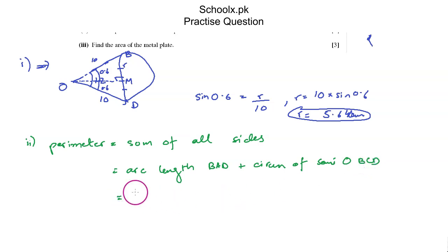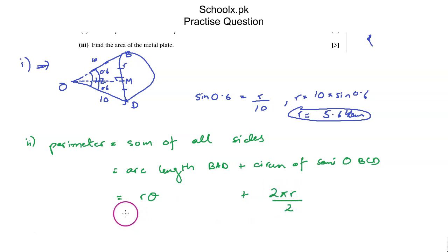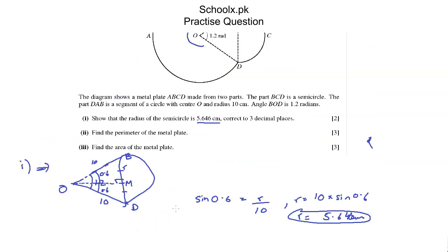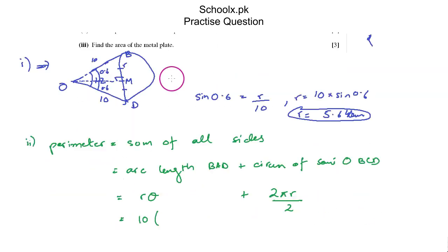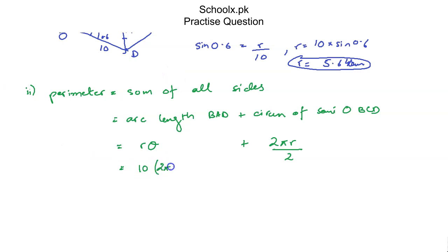The formula for arc length when the angle is in radians is Rθ, and the circumference of a semicircle is 2πR / 2. For arc BAD, θ = 2π − 1.2 (the larger angle, not the minor arc BD). So: perimeter = 10 × (2π − 1.2) + 2π × 5.646 / 2. Computing this gives 68.6 cm.